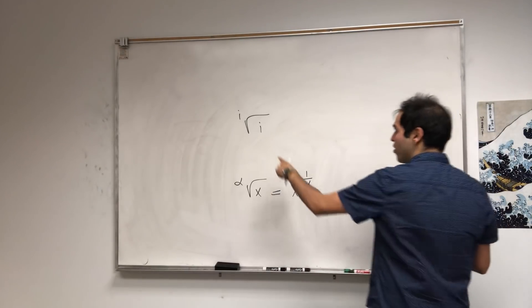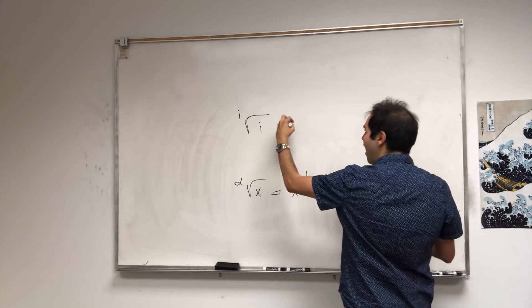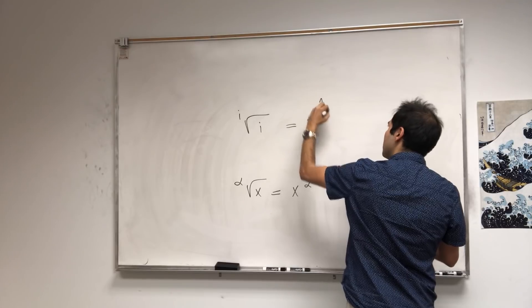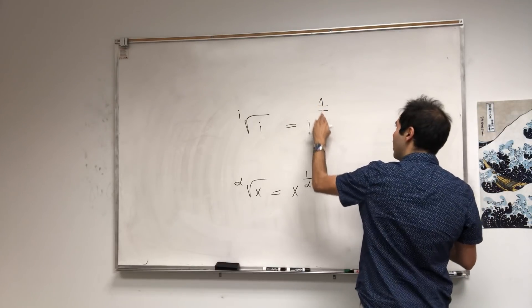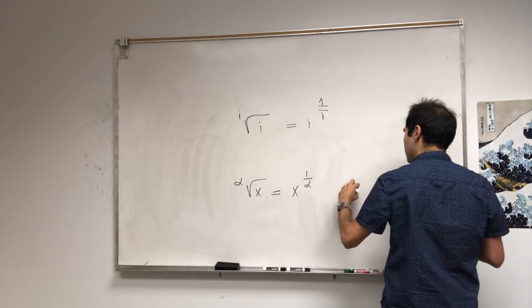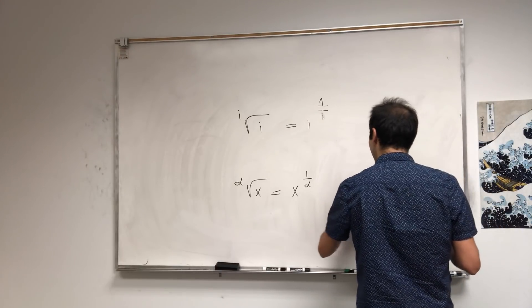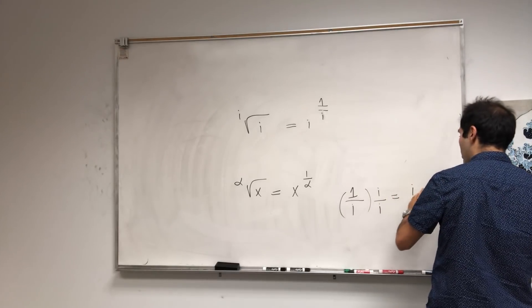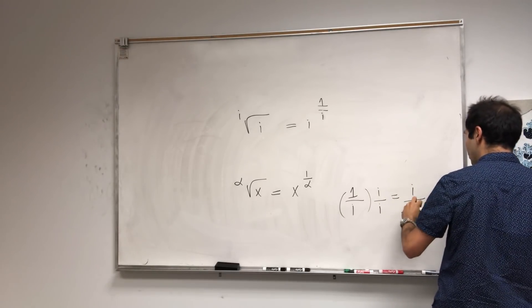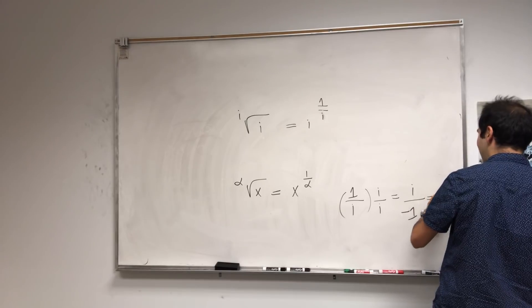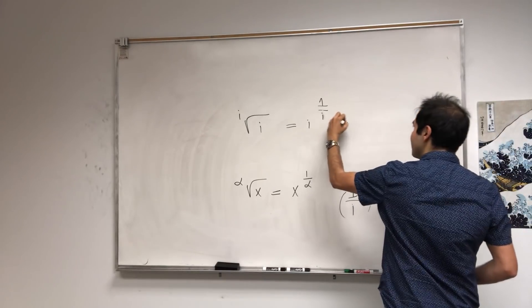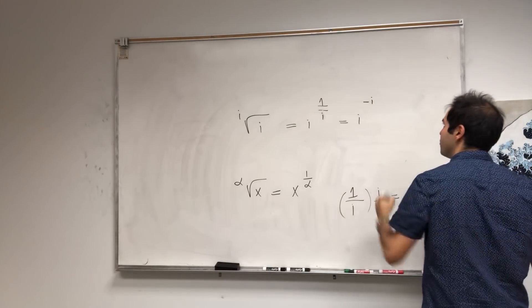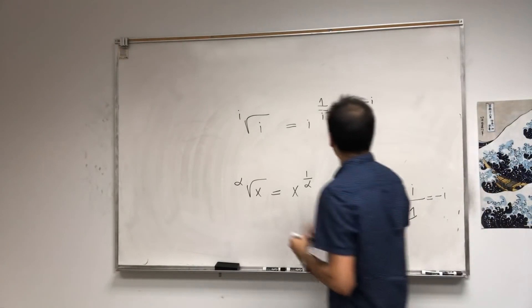And therefore, the i-th root of i becomes i to 1 over i, but 1 over i, I'd like to remind you, you multiply both sides by i and you get i over i squared, which is minus 1, and that becomes minus i. So what this is, it's i to the minus i, and that's one thing.